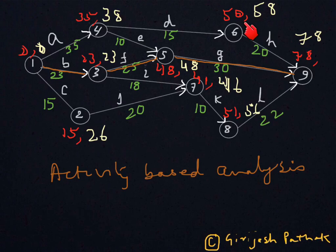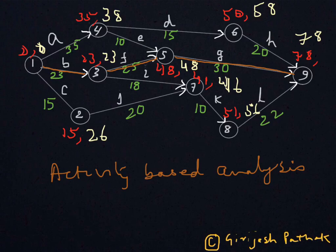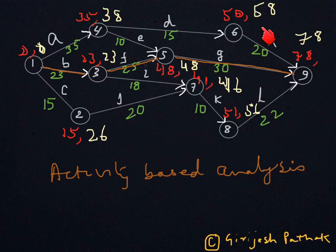As you can see on node 6, there are two numbers written: 50 and 58. So 50 is the earliest time and 58 is the latest time. The earliest time means you can't be on that node before 50 days, and the latest time means if you are not on that node by 58 days, the project will be getting delayed. We have earliest time and latest time for all the nodes.